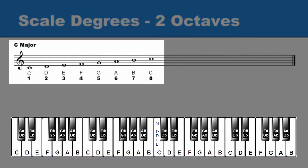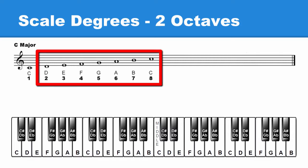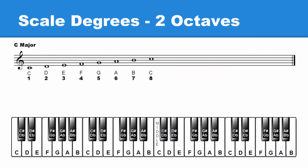For example, here's the C major scale in one octave. To make a two octave C major scale, we'll pick up where we left off and add the same notes one octave higher. We already have C, so our next note would be D, then E, F, G, A, B, and lastly C again.